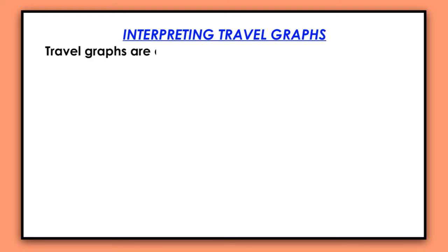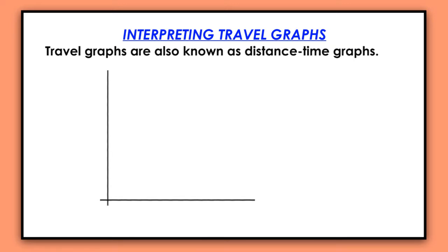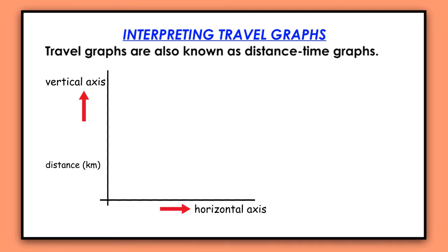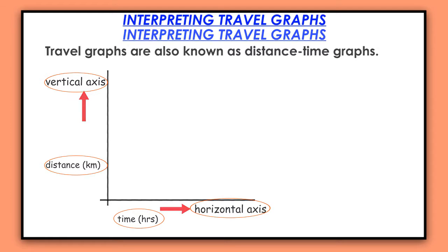Travel graphs are also known as distance-time graphs. They have two axes: the vertical axis which represents distance, and the horizontal axis that represents time. Travel graphs also have a title, as we shall see. Whenever you are given a question to interpret, you need to know that on the vertical axis there is distance and on the horizontal axis there is time.